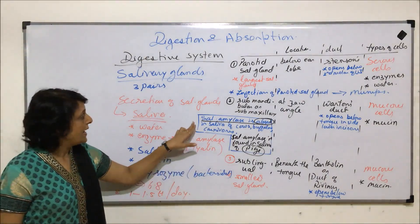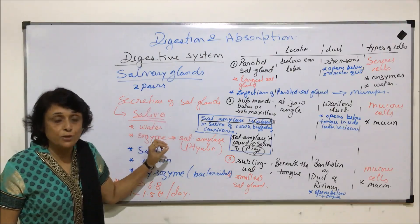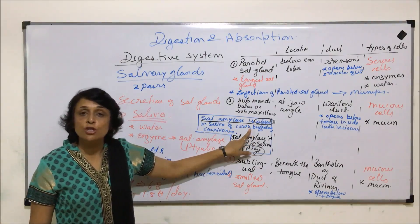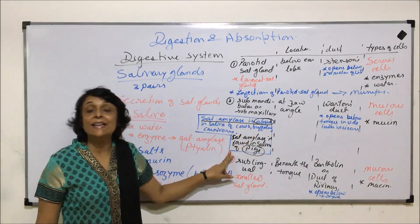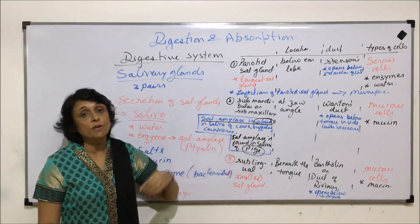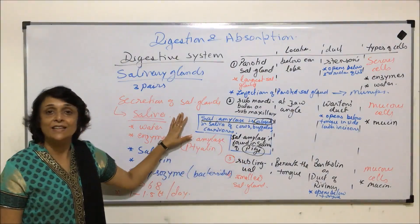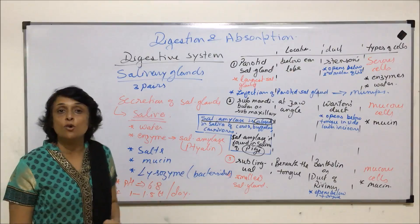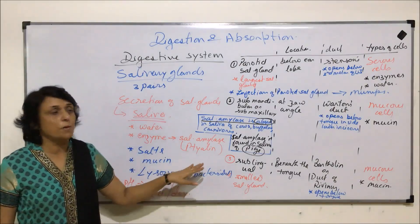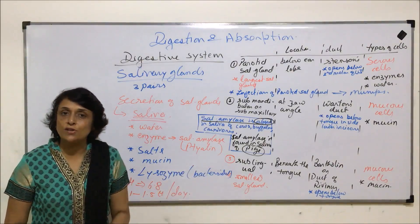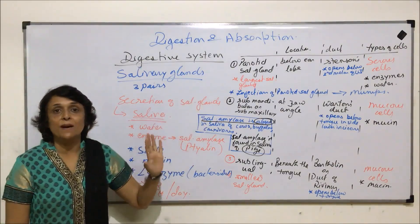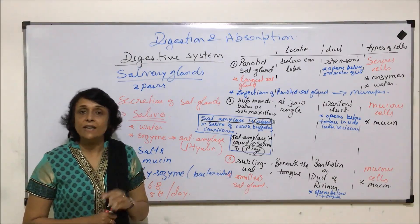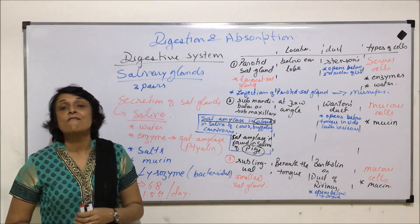The important things to remember: salivary amylase is absent in domestic animals like cows, buffaloes, sheep, and goats, and in carnivores, but it is found in the saliva of pigs. Human beings also have salivary amylase, which acts on starch or carbohydrates — this we will discuss again when we come to the process of digestion. This completes the buccal cavity part. The next structure we would be taking up is the pharynx.